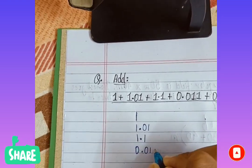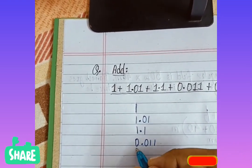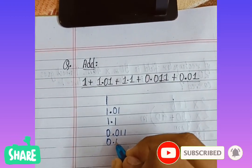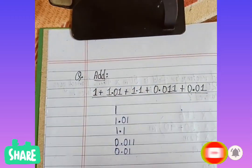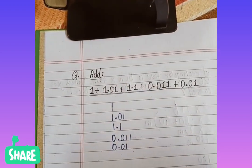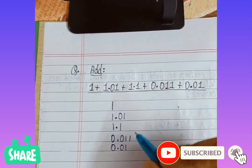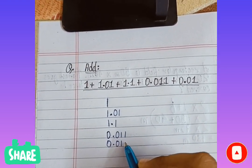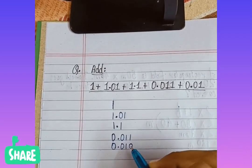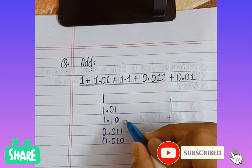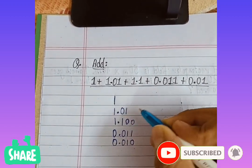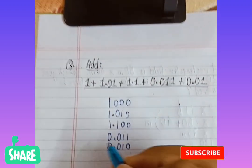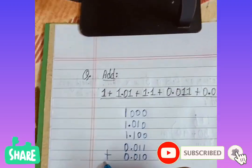0.011, and then 0.01. Now friends, you have to remember that while adding you can put zeros like this. Suppose this is the greatest, so I will put here a zero. Friends, the value will not change, the value will remain as it is. And now we will add this.